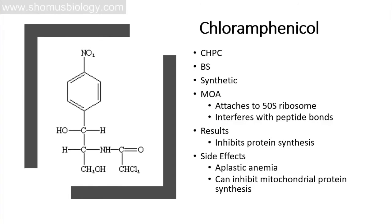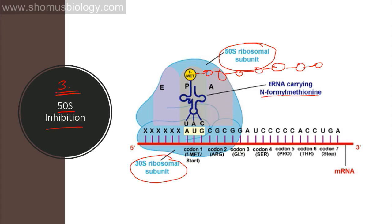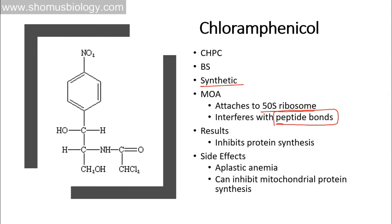An example of a 50s inhibitor is chloramphenicol, a synthetic antibiotic. Its mode of action is that it attaches to the 50s ribosome and interferes with peptide bond formation. Peptide bond formation between amino acids is carried out by the 50s ribosomal subunit, particularly the 23s rRNA present in that subunit. Chloramphenicol prevents the 50s subunit from catalyzing transpeptidation, inhibiting protein synthesis. Side effects include aplastic anemia and inhibition of mitochondrial protein synthesis.